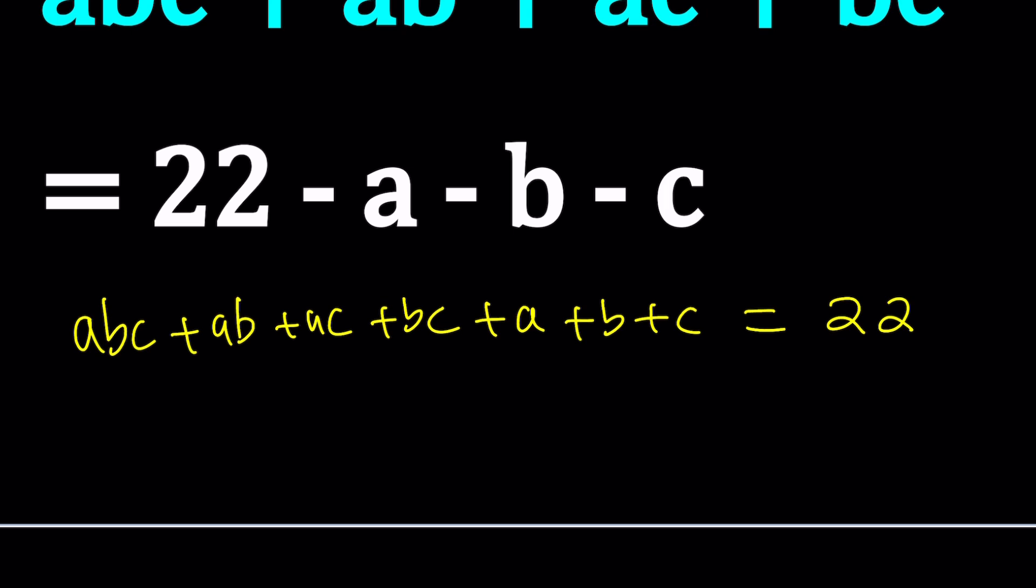And how do we factor it? I'm going to factor all the terms that contain a. Of course, they have something in common. So we're going to take out an a. And this will be bc, and then plus b, plus c, plus one for the a. Plus everything else. bc, plus b, plus c equals 22.